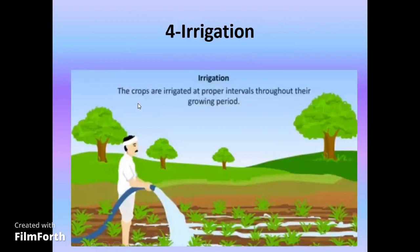The fourth step is irrigation. Irrigation means that crops are irrigated at proper intervals throughout their growing periods.